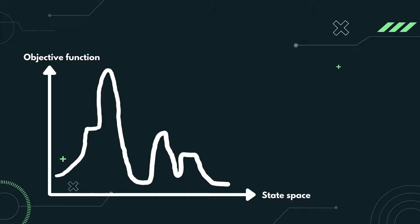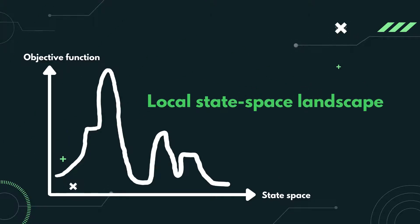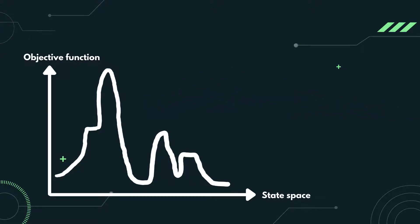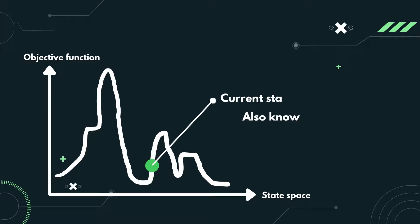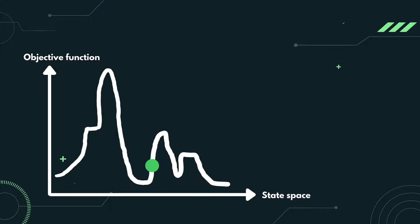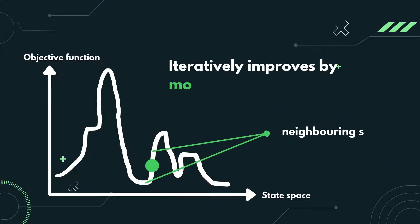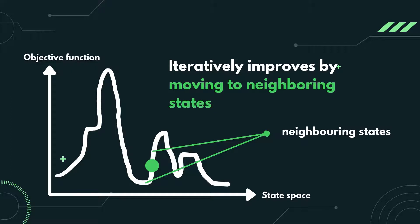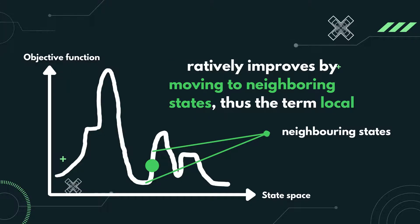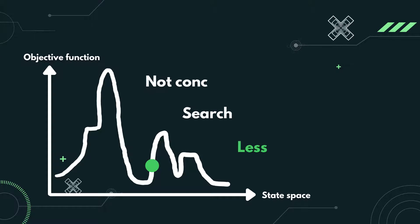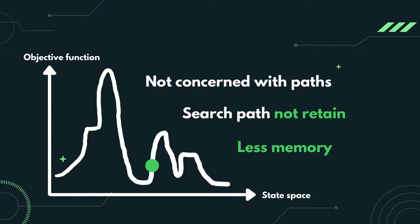So how does a local search algorithm operate? This is a local state space landscape used to understand local search algorithms. First, we start with a candidate solution — let's say this current state, also known as location, is our candidate solution. Then we iteratively improve it by moving to neighboring states, thus the term local. As the algorithm does not concern itself with paths in the tree, the search path is not retained, thus using less memory.